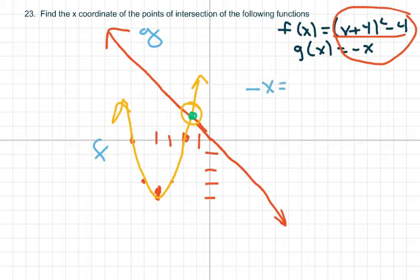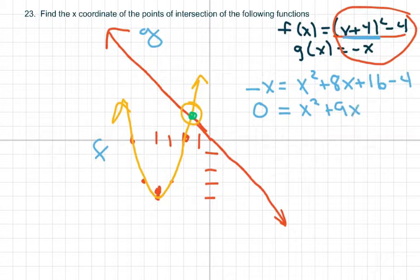So you just set them equal each other. So negative x equals, I'm going to go ahead and foil this out. This is x squared plus 8x plus 16 minus 4. And then I'm going to move the x over. So we get 0 equals x squared plus 9x plus 12. Since I can't factor this, I'm going to use the quadratic formula.